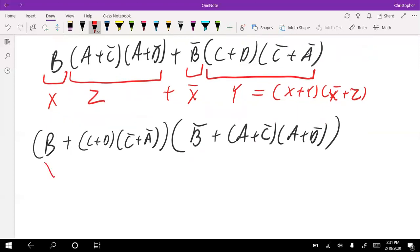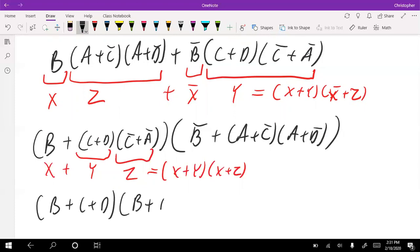Each of these individual terms is an x plus y with a z, which expands out to x plus y times x plus z. So I get B bar plus A plus C bar, A plus D bar times B plus C plus D, B plus C bar plus A bar. Copy down this last term.